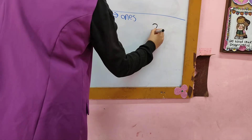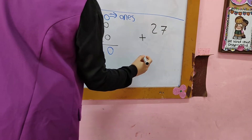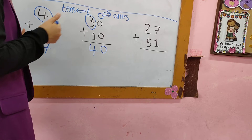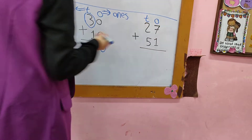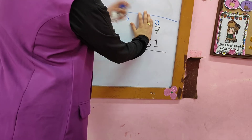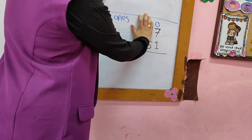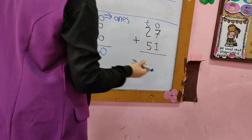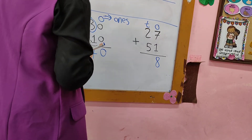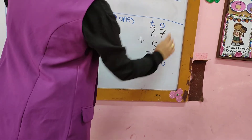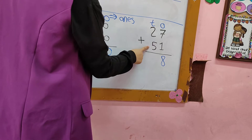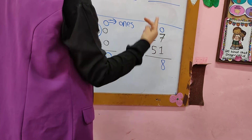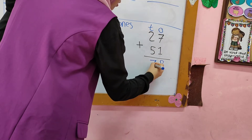If we have 27 plus 51, the first thing: write O and T. In the 1's column: 7 plus 1. I put the greatest number, 7, in my mind and 1 on my fingers and count after 7. After 7: 8. In the 10's column: 2 plus 5. Where is the greatest, 2 or 5? 5. I put 5 in my mind and 2 on my fingers and count after 5. After 5: 6, 7. So the answer is 78.